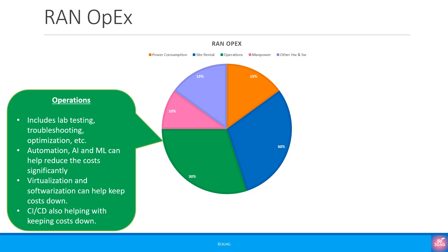Operations is another big expense for RAN. There are many different tasks here, including testing everything in the lab to make sure everything is working smoothly, including different versions of software from different vendors. Many of these repetitive manual tasks can now be automated thanks to artificial intelligence and machine learning. The vendors are also providing tools that can help with automation. Virtualisation and softwarisation is another area that has helped reduce the hardware and convert many of the network functions into software. It is now easier to deploy binaries to test them out. Continuous integration and continuous development is also helping by doing testing on a continuous basis rather than once every quarter.